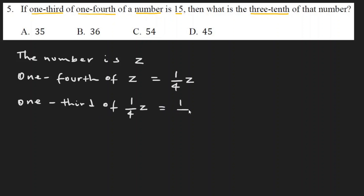We can say one third of one fourth of Z as a mathematical expression. The given information A is the number. When we look at three tenths of Z, we are calculating that number.